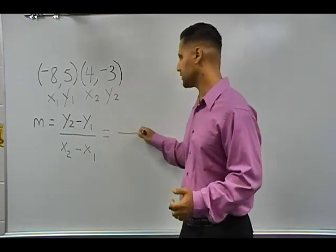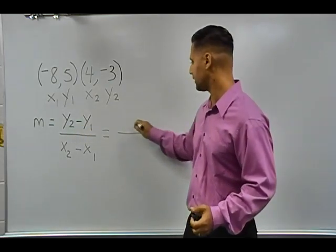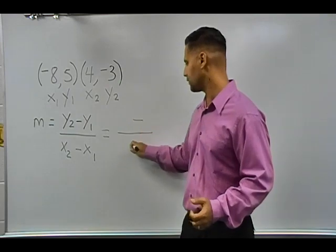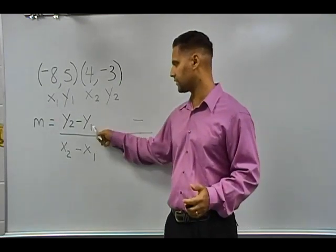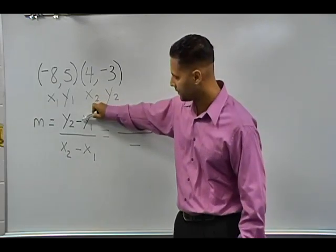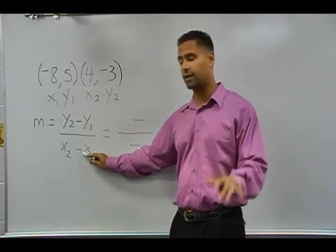So for the numerator, we are going to take our y2 and our y1 and subtract them. So I am going to write a subtraction sign on the top and also a subtraction sign on the bottom, because that's given inside our slope equation. Notice the minus sign between the two y values and the minus sign between the two x values.